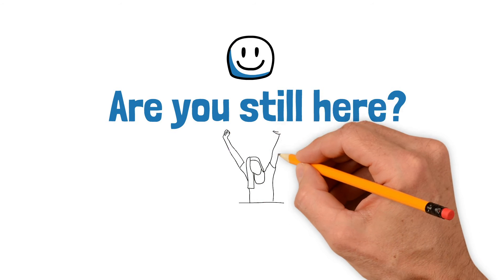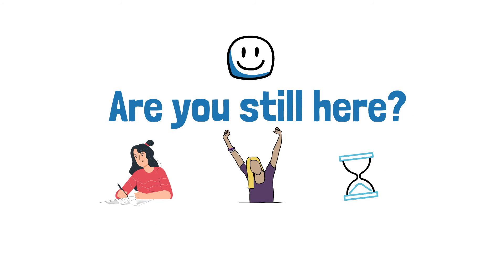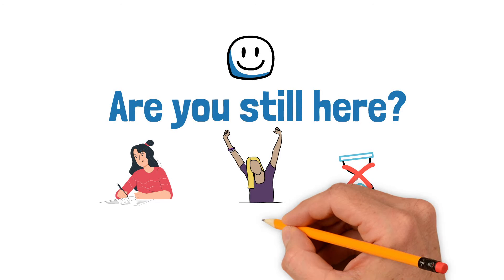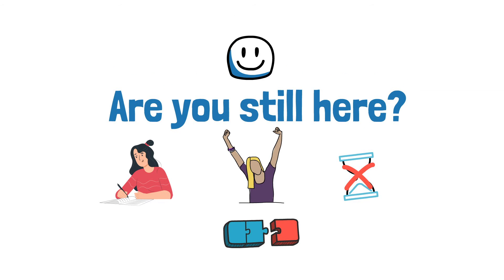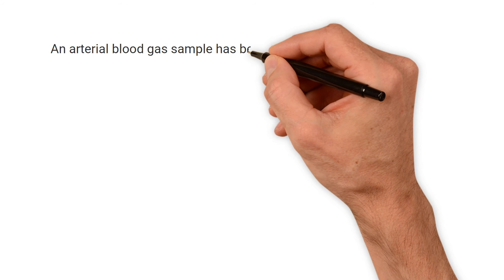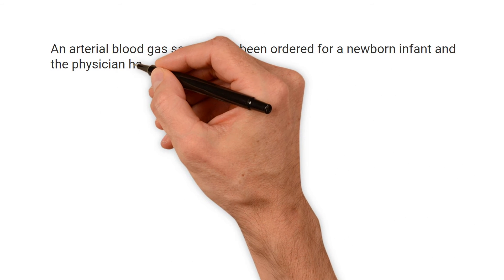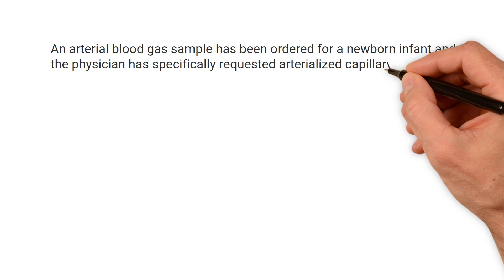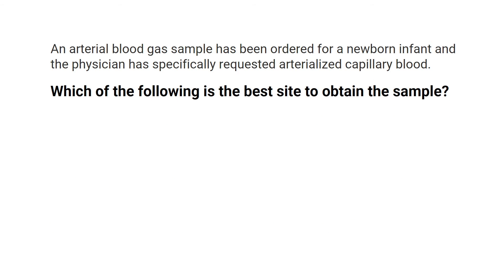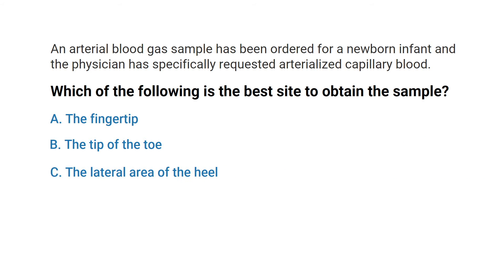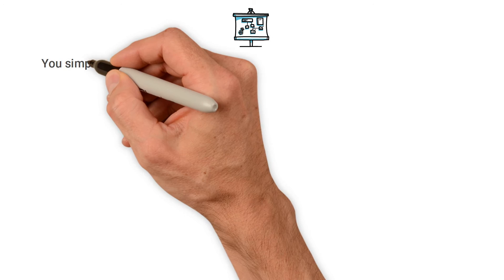Let's break down another practice question. An arterial blood gas sample has been ordered for a newborn infant, and the physician has specifically requested arterialized capillary blood. Which of the following is the best site to obtain the sample: A) the fingertip, B) the tip of the toe, C) the lateral area of the heel, or D) the earlobe?